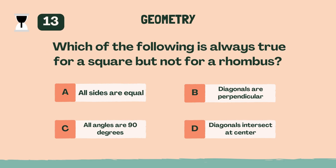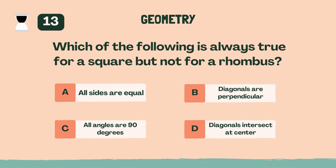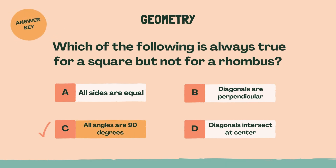Which of the following is always true for a square, but not for a rhombus? C, all angles are 90 degrees.